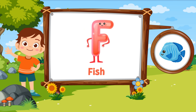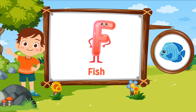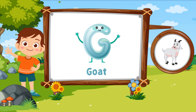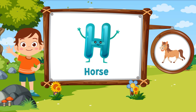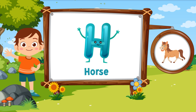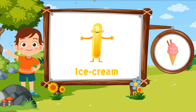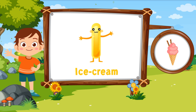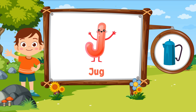F for fish. G for goat. H for horse. I for ice cream. J for jug.